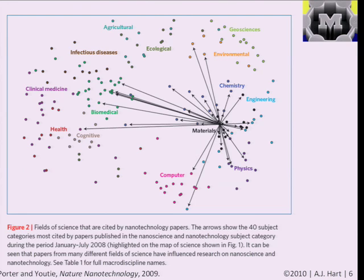They also looked at other fields cited by nanotechnology papers — papers discussing impacts or new materials made for suggesting usefulness elsewhere. From this you can see that there's a lot of work in materials with respect to other applications: health and medicine, ecology and the environment, and computer science and physics. Clearly, the idea of controlling materials at very small scales is an interdisciplinary topic, and there is feedback — understanding how those properties could affect these areas in terms of impact and applications.